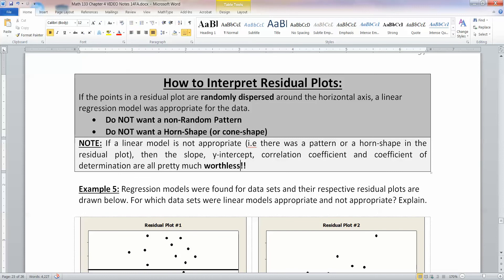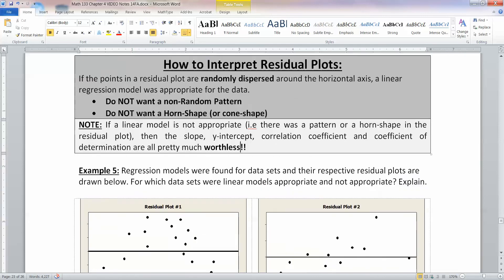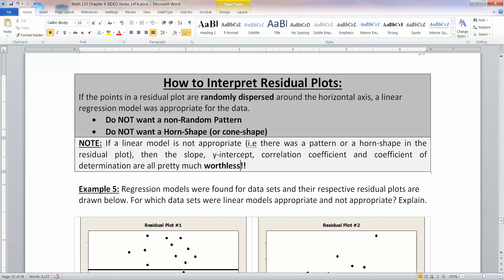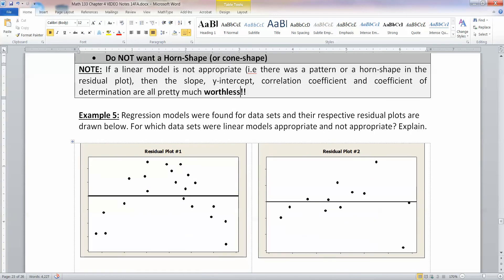If the linear model is not appropriate, i.e., if there was a pattern or a horn shape in the residual plot, then the slope, the intercept, the correlation coefficient, all of it, it's all worthless. It doesn't mean anything. So the residual plot kind of trumps all the earlier things we've learned. So if the residual plot is bad, that means that you shouldn't be doing all the things that we were doing earlier in this chapter at all.